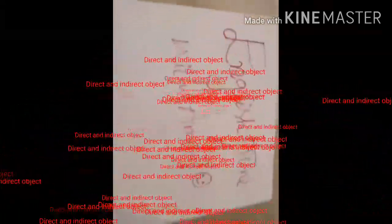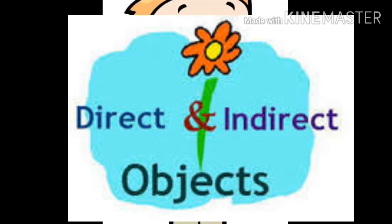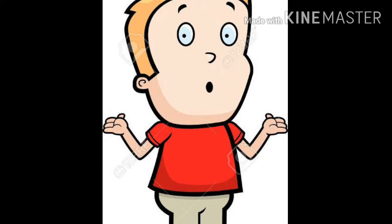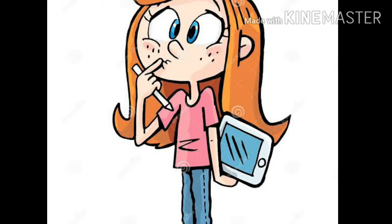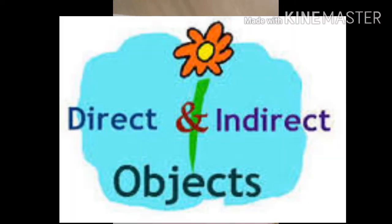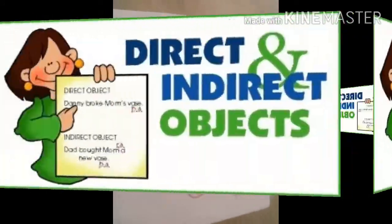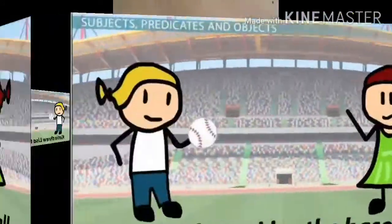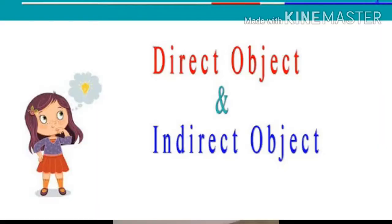In a sentence, we may have a direct object and an indirect object. A direct object directly receives the action of a verb. For example, 'Ali hit the ball.' Here, 'ball' is the direct object because it directly receives the action of the verb 'hit.'